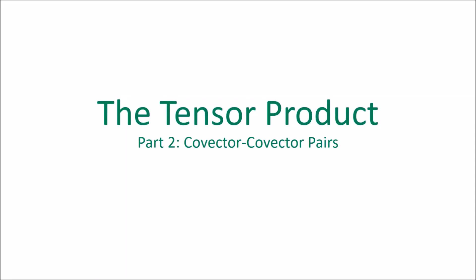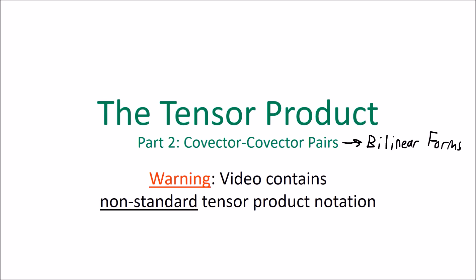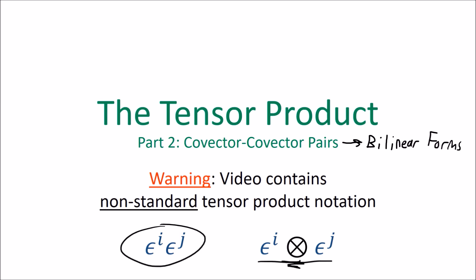In this video, I'm going to introduce the idea of covector-covector pairs and show that these covector-covector pairs are, in fact, bilinear forms. I'm also going to be using some non-standard notation for the tensor product. Most textbooks will write it with the circle-times operator in between, but I'm going to omit that symbol and just write the covectors next to each other.